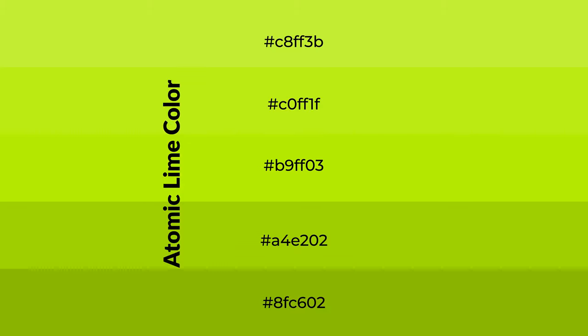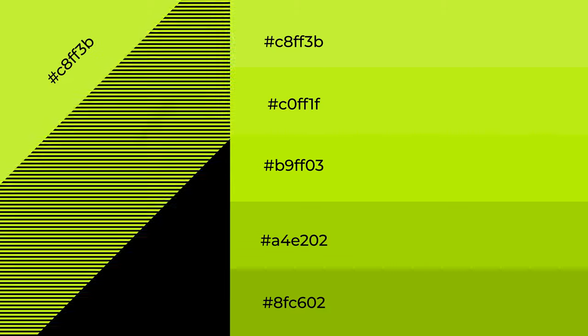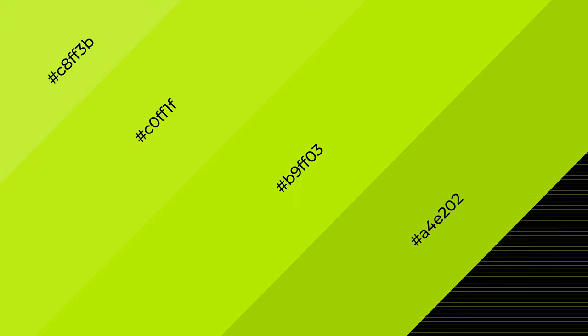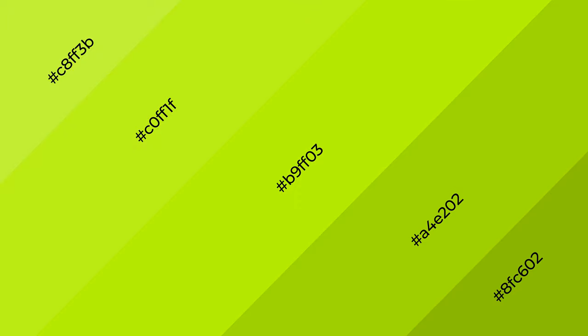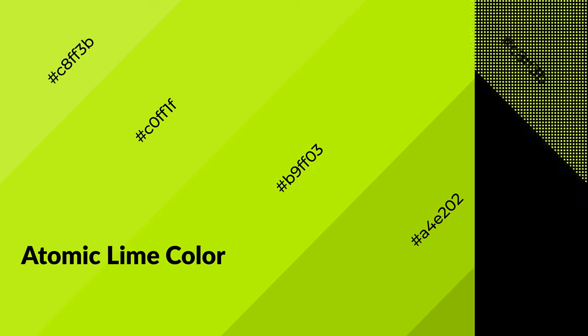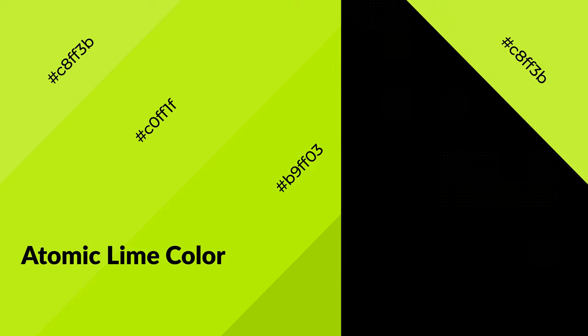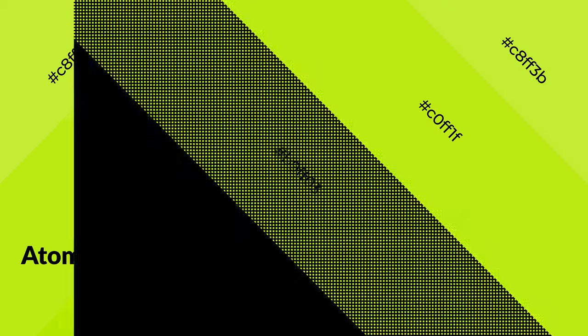To generate shades of a color, we add black to the color. Shades are used in patterns, 3D effects, and layers — they create depth and drama. Atomic lime is a warm color and it emits cozier and active emotions. Warm colors are symbols of warmth, fire,